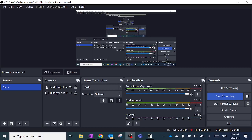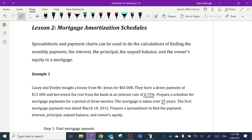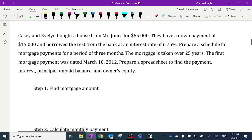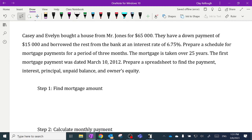Okay, everybody, this is lesson two for our essential math grade 12 class in the home finance unit, and we are going to learn how to make a mortgage amortization schedule. Basically, we're making a chart. First of all, we're going to actually be making a spreadsheet. First thing I'm going to do is read the question. Casey and Evelyn bought a house from Mr. Jones for $65,000. They have a down payment of $15,000. They borrowed the rest from the bank at an interest rate of 6.75%. Something very drastically bad would have to happen to our economy for houses to be worth $65,000 again, but we're going to keep the numbers small so that we don't have so many numbers to keep track of on our first example here.